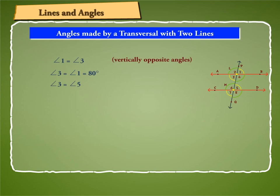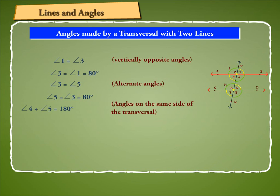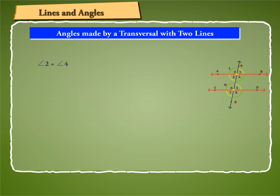Since angle 3 and angle 5 are alternate angles, angle 5 is equal to angle 3 is equal to 80 degrees. Again, angle 4 and angle 5 are interior angles on the same side of the transversal, so angle 4 plus angle 5 is equal to 180 degrees. This gives angle 4 is equal to 180 degrees minus angle 5, which is 180 minus 80, equal to 100 degrees. Angle 2 and angle 4 are vertically opposite, so angle 2 is equal to angle 4 is equal to 100 degrees.